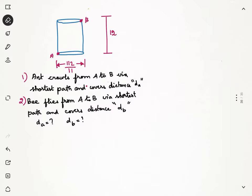In the given problem, we have a cylinder whose height is 12 units and whose diameter is 112 by 11 units. We have two questions. First question is an ant crawls from A to B and it takes the shortest path along the surface of the cylinder and it is covering the distance dA. What is the distance dA?